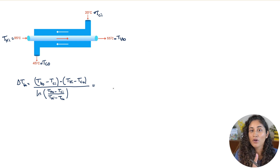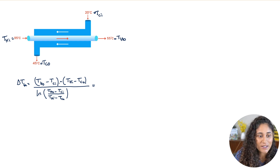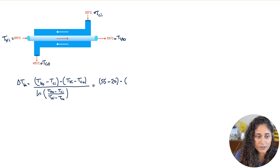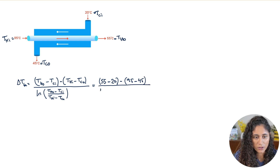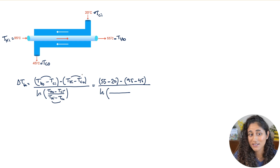Now let's plug the numbers into the equation. T_ho is 55°C, minus T_ci which is 20°C, then minus T_hi which is 95°C, minus T_co which is 45°C — all divided by the natural log of that ratio. Notice that the numerator terms correspond directly to the denominator terms, so we can simplify: the numerator gives (55 − 20) and the denominator gives (95 − 45).